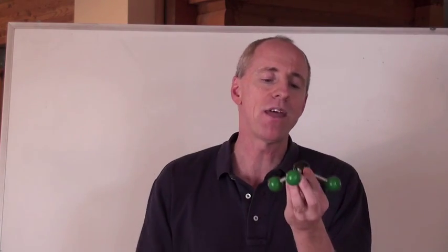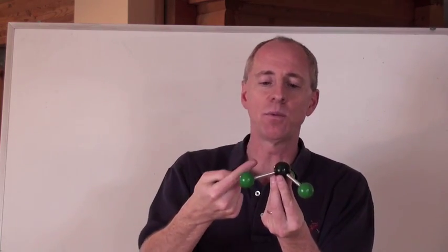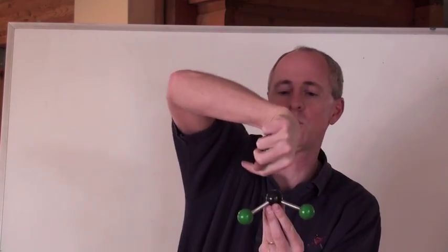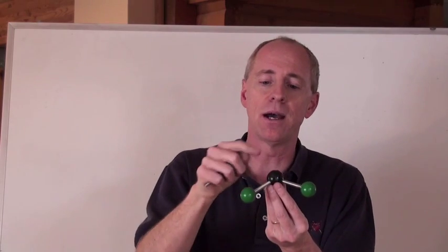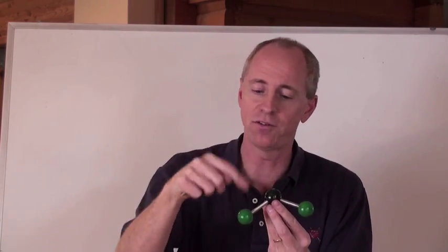But when we have that pyramidal shape, remember, it's still four effective pairs, pyramidal shapes are always, because the lines would be pointing this way, this way, and this way, or out, out, and out, depending on the polarity of these atoms here. Maybe these are H's or F's or Cl's or whatever.